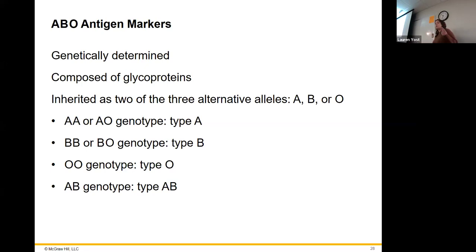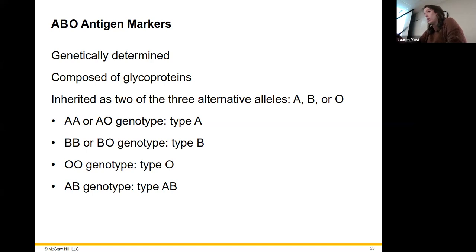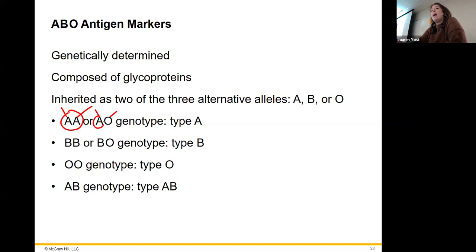If you have A blood type, you could have gotten an A gene from mom and an A gene from dad, or an A gene and an O gene. The A gene codes for sugar A, which gets expressed. O is the base — it's not anything extra. It's the foundation everything else is built off of. Everybody has that structure.